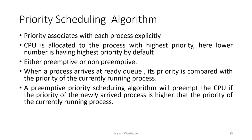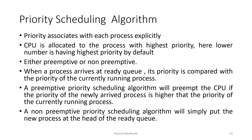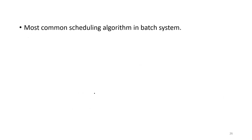In case of preemptive priority scheduling algorithm, the running process will preempt the CPU if the priority of the newly arrived process is higher than the priority of the currently running process. In case of non-preemptive type of priority scheduling algorithm, the currently running process will hold the CPU till its execution and the new process will be put at the head of the ready queue — meaning priority is given to the running process.